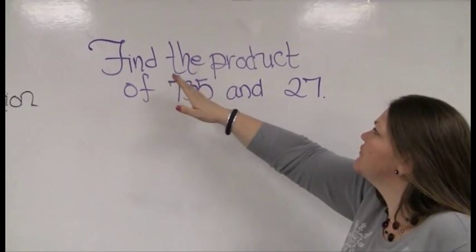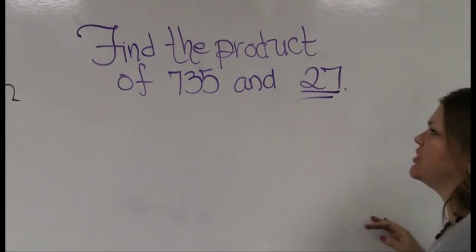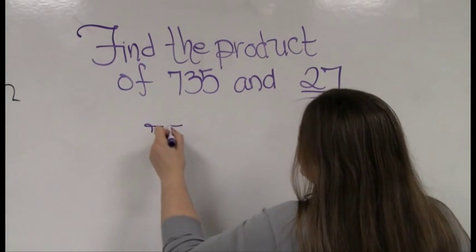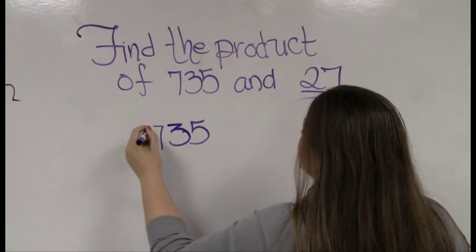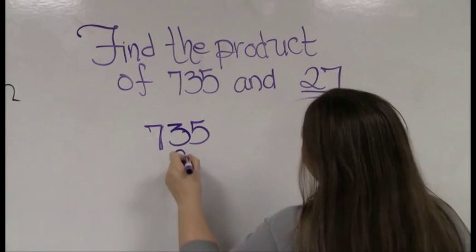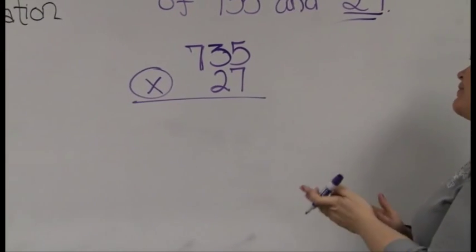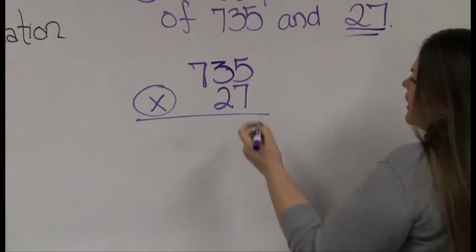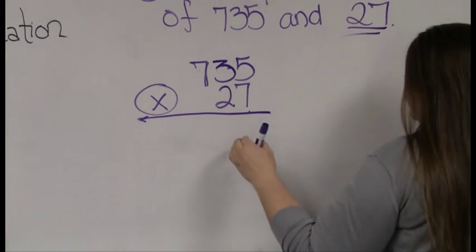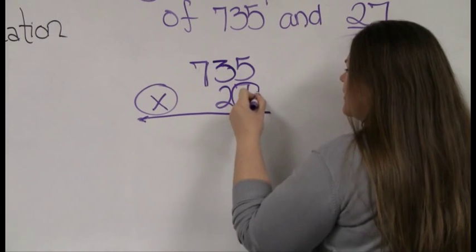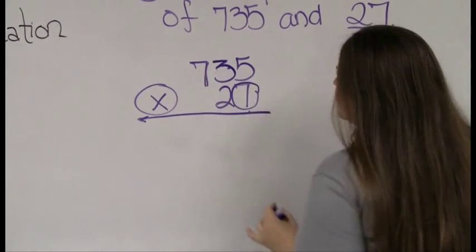Find the product of 735 and 27. This is harder because I'm multiplying by a two-digit number. In multiplication, we line up at the right — unlike addition and subtraction, it is proper to say 'line up at the right.' Multiplication passes out. I start with the rightmost number, the 7, and work left. Each number gets passed out, so this 7 will multiply three times: 7×5, 7×3, and 7×7.